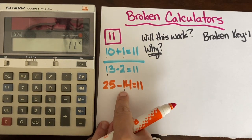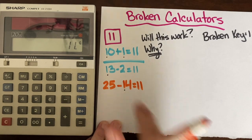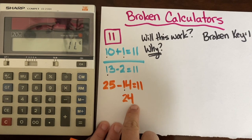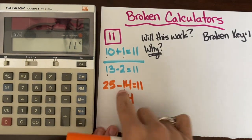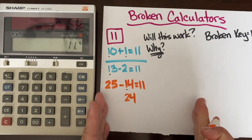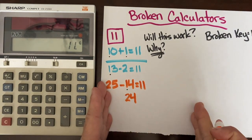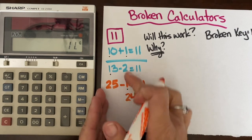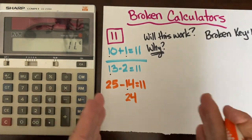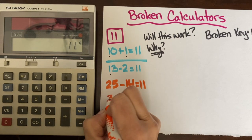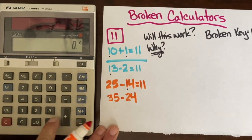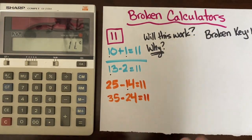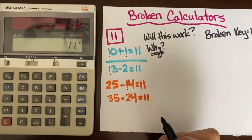Wait — 25 minus 14 did not work because there is a one in 14: one ten, four ones. So let's make this two tens four ones, which is 24. Subtraction really means the distance from one number to another — the distance from 14 to 25 is 11. If I change 14 to 24, I need to increase 25 by one group of ten to keep the same distance, so 25 becomes 35. Let's check: 35 minus 24 equals 11. This one works — we found one way!